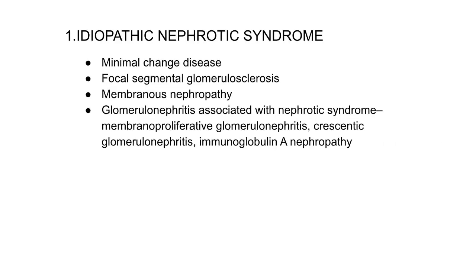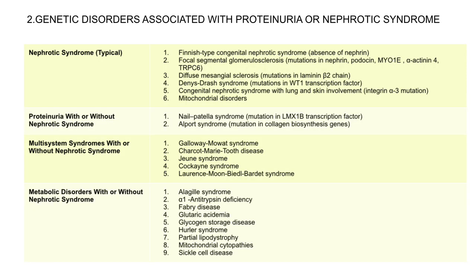Idiopathic nephrotic syndrome means the exact cause is not clearly defined, and the pathological types are minimal change disease, FSGS, membranous nephropathy, and glomerulonephritis associated with nephrotic syndrome.